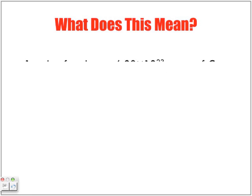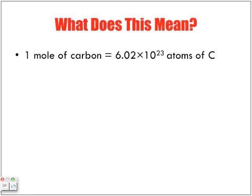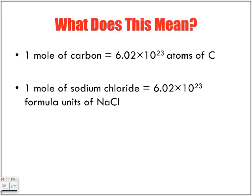So what does this mean? If we have one mole of carbon, we have 6.02 × 10²³ atoms of carbon. But one mole of sodium chloride equals 6.02 × 10²³ formula units of NaCl.